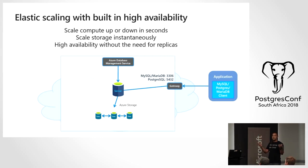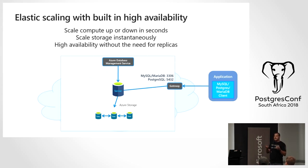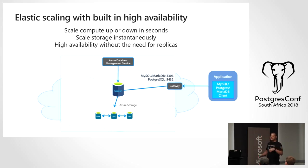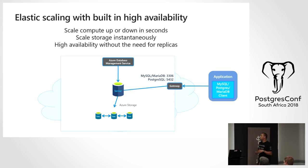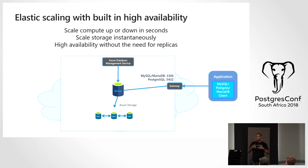Elastic scaling allows you to work with the smallest amount of resources in a cloud operating model — you want to run lean and only scale up when you have spikes. We work on a vCore model as well as a memory model. You can scale instantaneously via the Azure CLI or the Azure portal. This doesn't affect your operational systems; even in an OLTP environment you'll see a little blip but no downtime as you scale up or down.